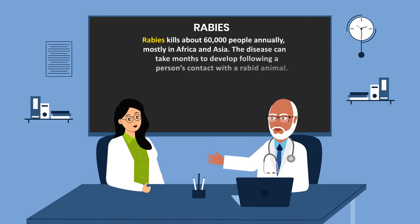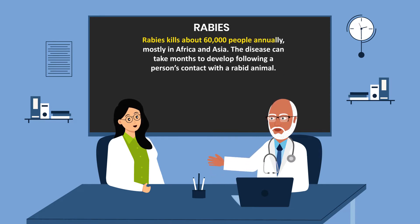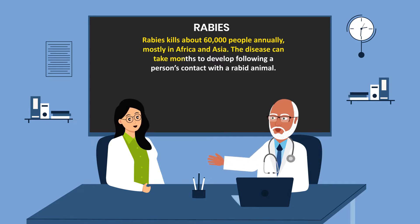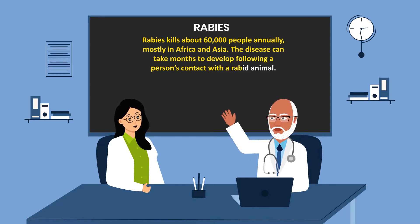Rabies kills about 60,000 people annually, mostly in Africa and Asia. The disease can take months to develop following a person's contact with a rabid animal.